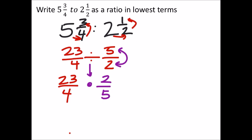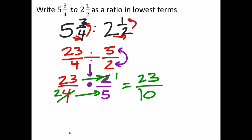And if you really wanted to, at this point you could reduce the 2 and the 4 — not that you'd have to, but you could, and that would just make things work a little bit smoother. 23 times 1 is 23, over 2 times 5 is 10. So as a ratio, for this one we would write 23 to 10.